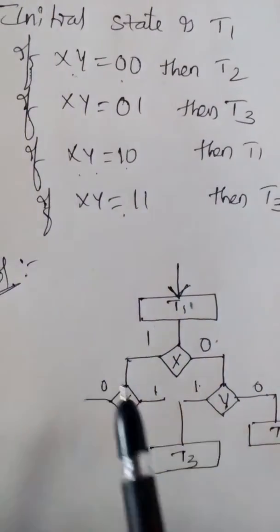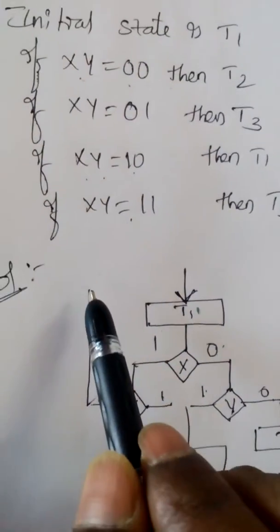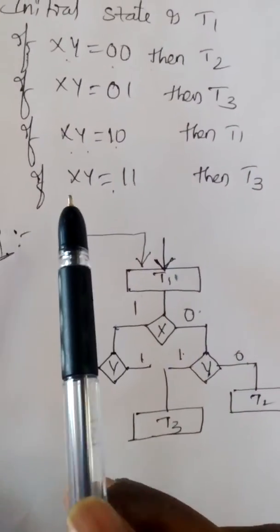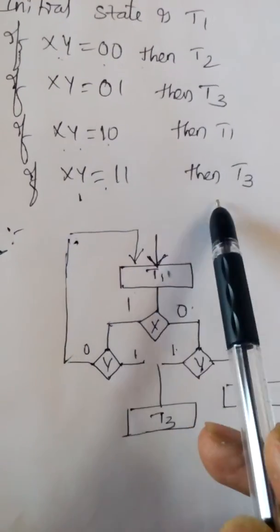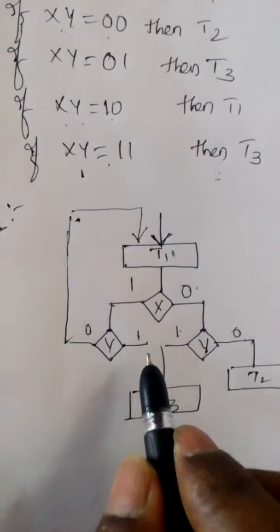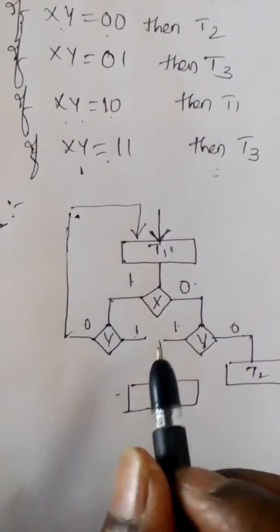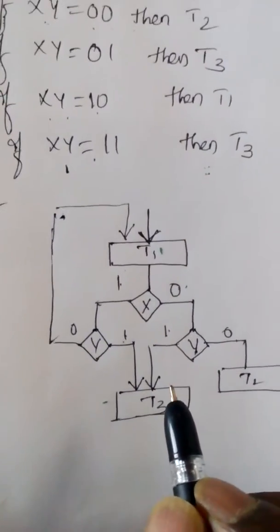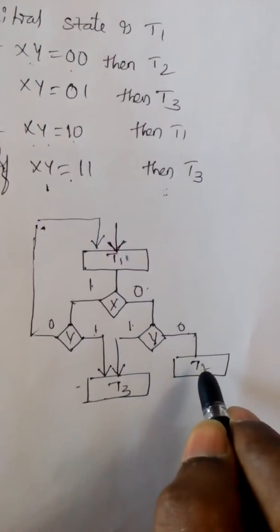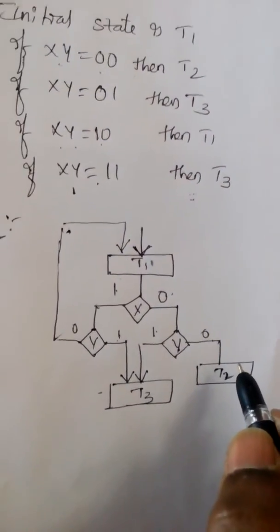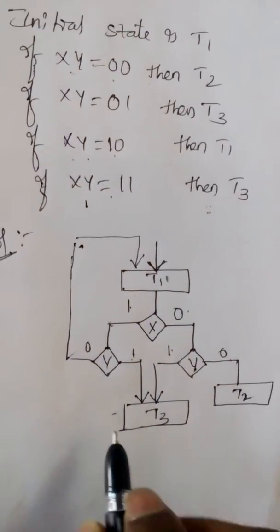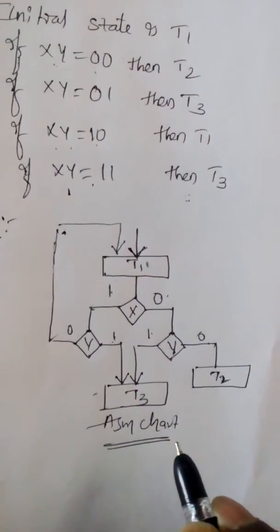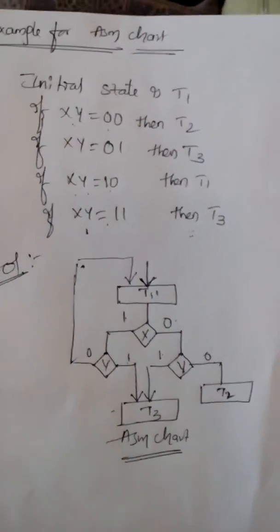The next condition is: if xy is equal to 11, that is x is 1 and y is 1, then the result is T3 — the state box T3. So this is simple and easy to construct the ASM chart for any of the conditions. Thanks for watching. Goodbye.